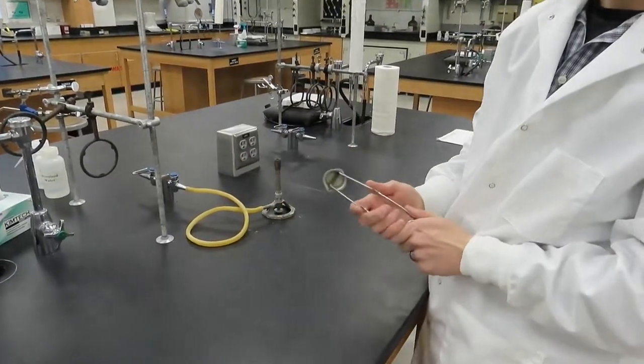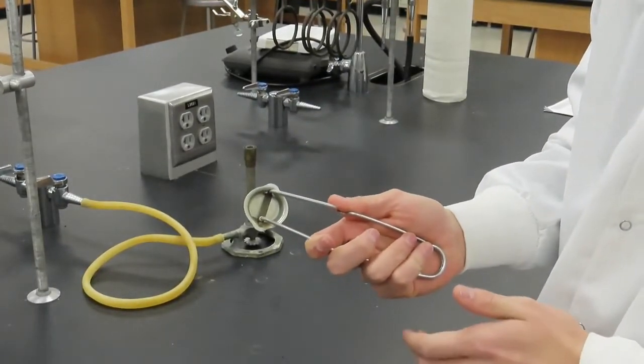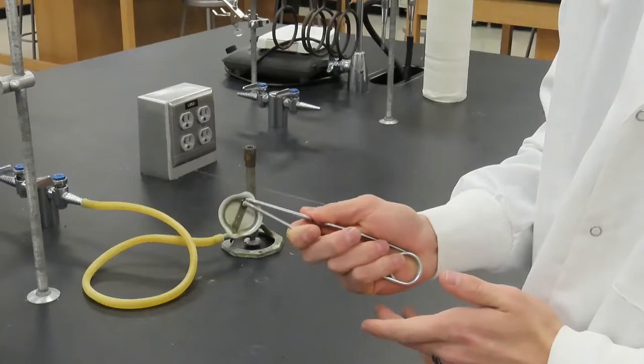The burner can now be lit with a flint striker. With sufficient pressure, practice dragging the flint across the metal rod in order to produce sparks.